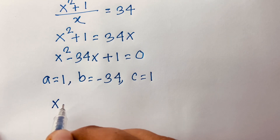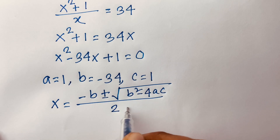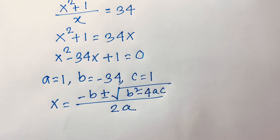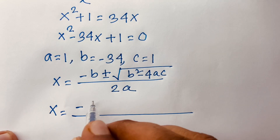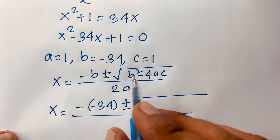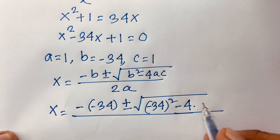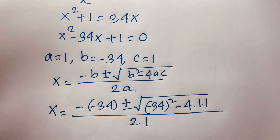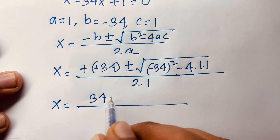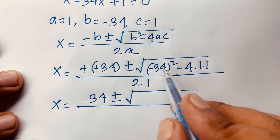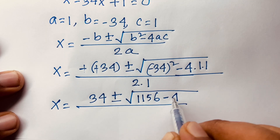I can say X is equal to minus B plus or minus square root of B squared minus 4AC over 2A. Here A is 1, B is minus 34, and C is 1, and 2A is 2. So X equals 34 plus or minus square root of minus 34 squared minus 4 times 1 times 1, which is minus 4, over 2.